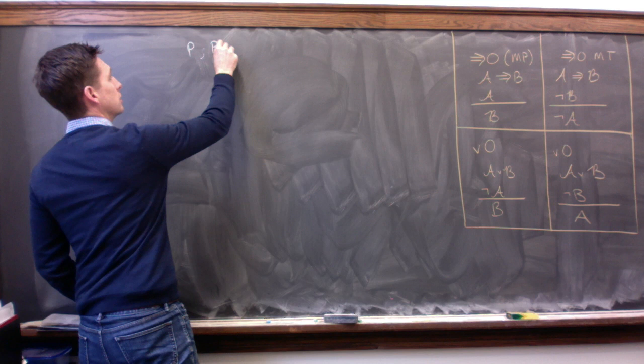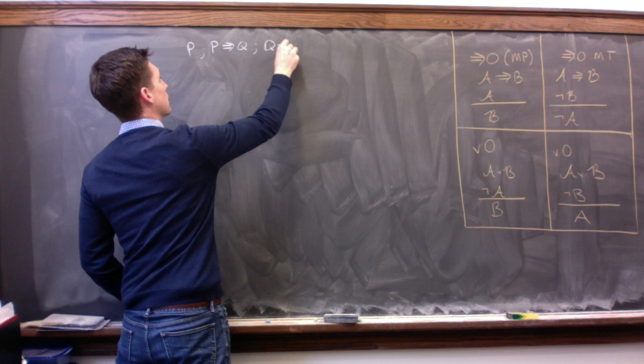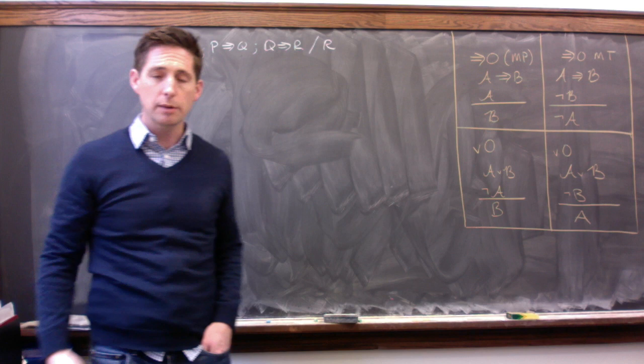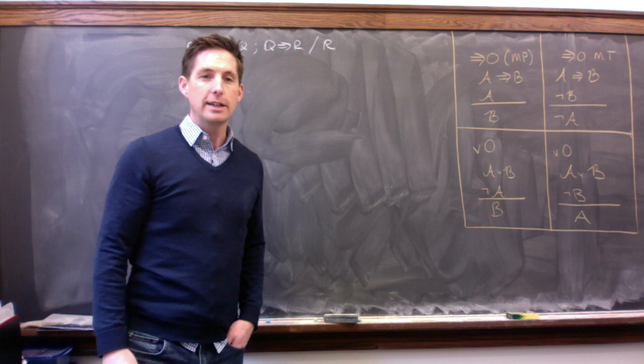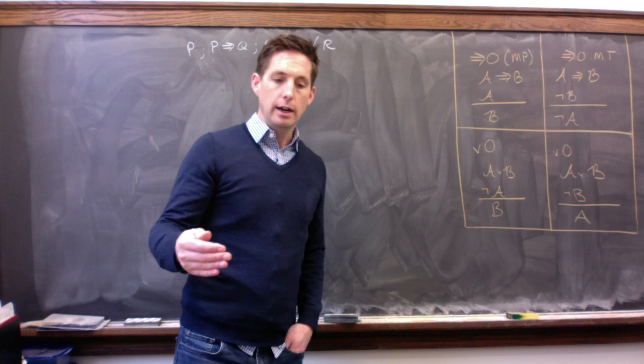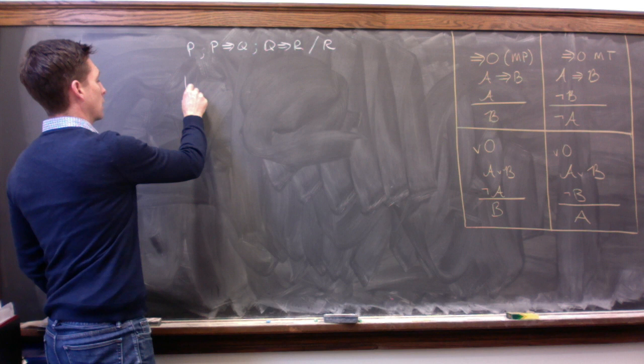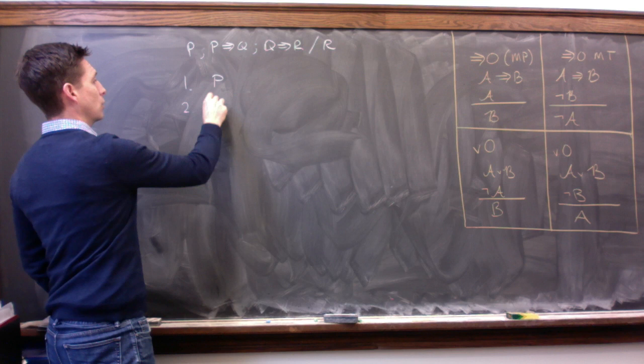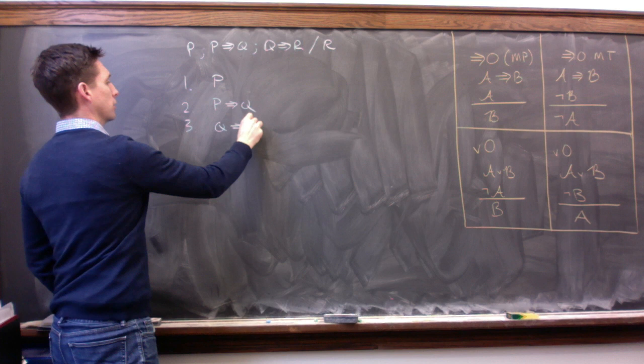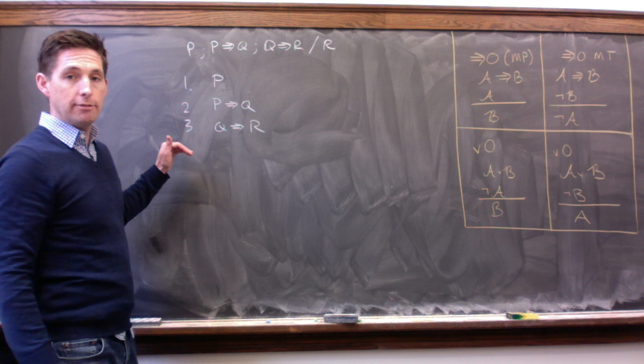So I'm now on section four of the slides, number 16 on derivations. So let's start and just see how we might prove a certain kind of simple argument to be valid. So let's take the argument to be this: premise one is P, premise two is P arrow Q, premise three is Q arrow R, and our conclusion is R. So I've just written the argument horizontally like that to save some room here on the board. All right, so how are we going to construct a derivation? Well, every derivation starts out by writing down the premises.